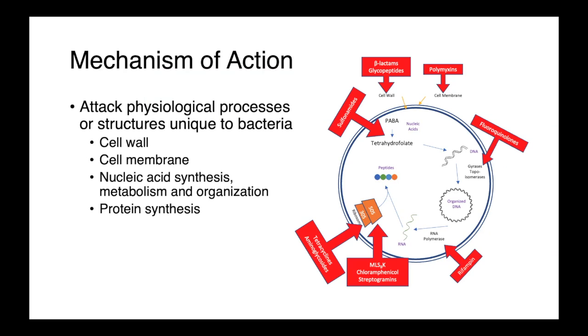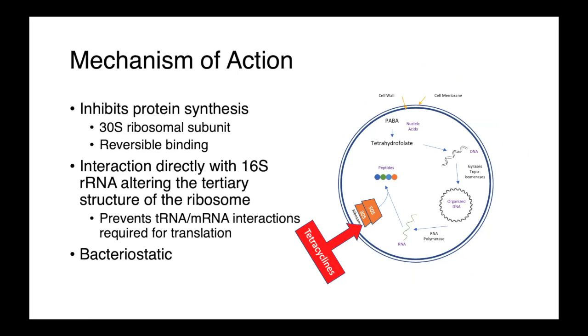The tetracyclines are protein synthesis inhibitors which, like the aminoglycosides, bind to the 30S ribosomal subunit. Unlike the aminoglycosides, this binding is reversible, which makes the tetracyclines bacteriostatic.